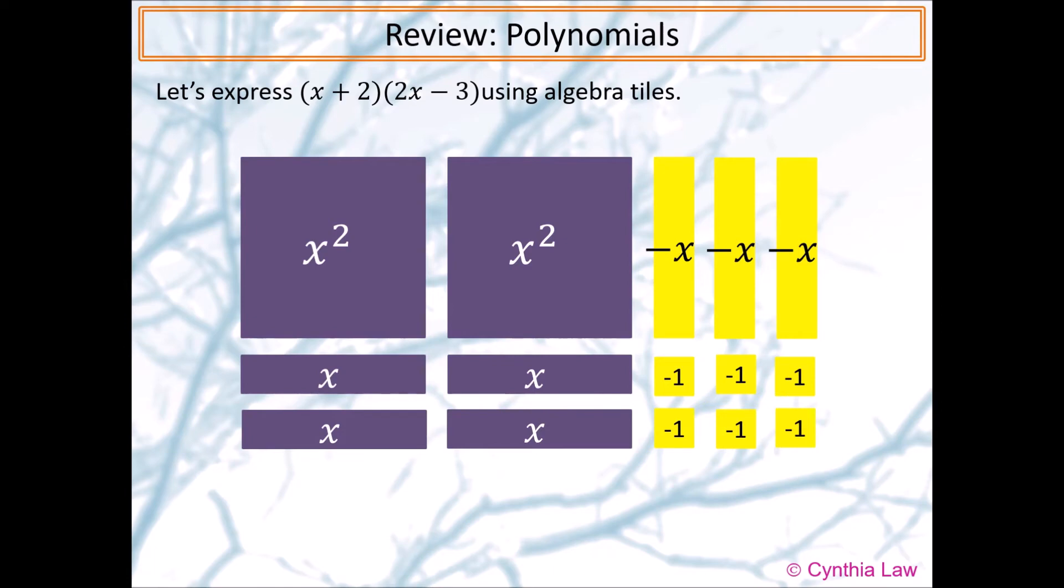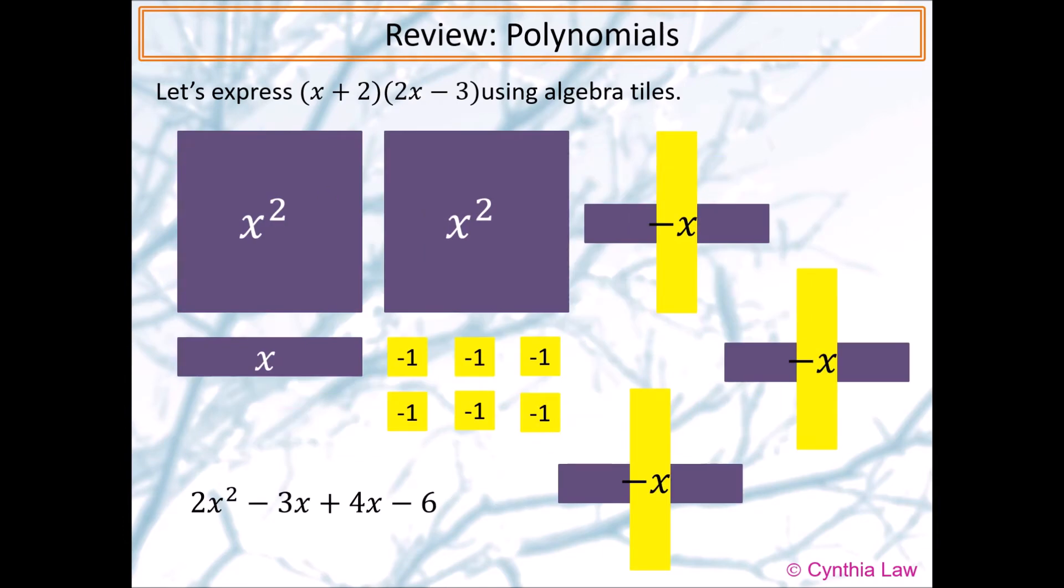If we count the tiles, we have 2x squared subtract 3x plus 4x minus 6. We can collect like terms in the expression.